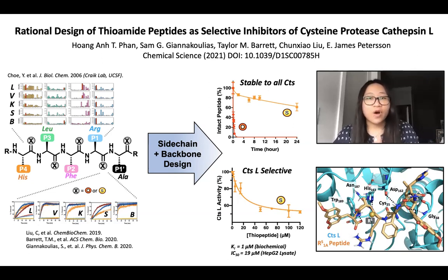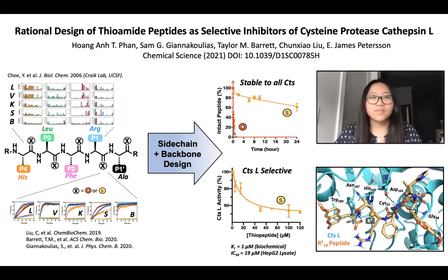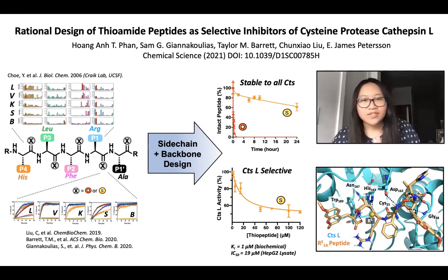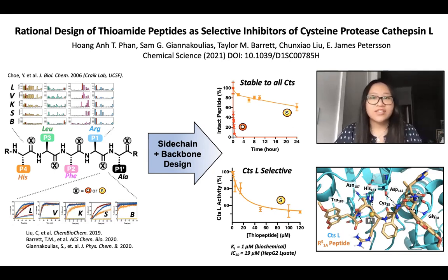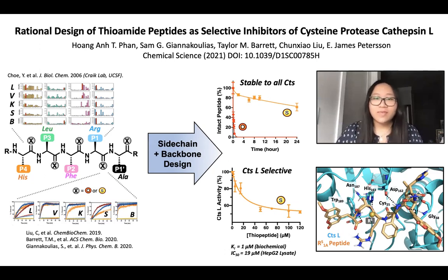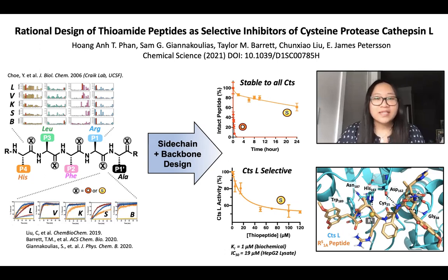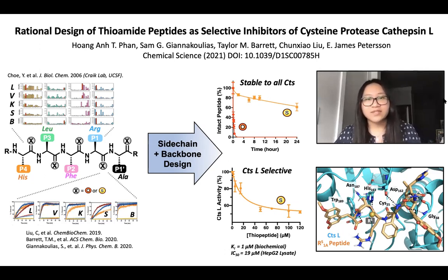In this paper we also did some computational simulations to rationalize some of our experimental data and the specific inhibitory effect of the peptide. To summarize, the study here demonstrates that one can rationally design and stabilize specific peptidyl protease inhibitors by strategic placement of a single thioamide, and it also shows the potential of thioamide modification in peptide-based rational drug design.